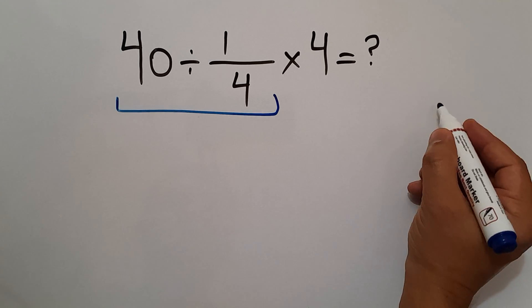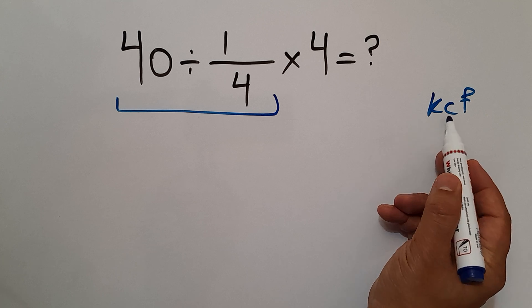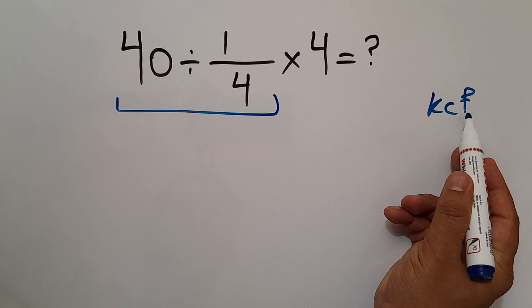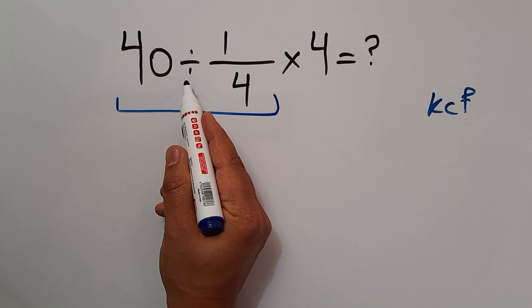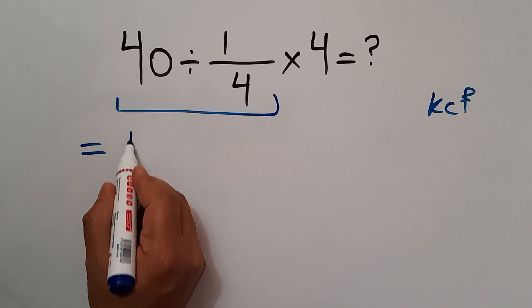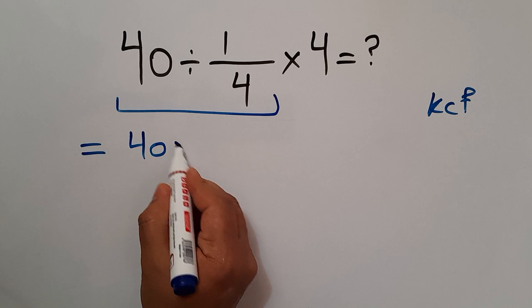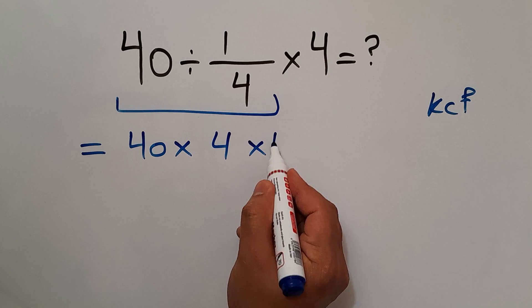According to the KCF rule: K stands for keep, C stands for change, and F stands for flip. Keep the first fraction, change division to multiplication, and flip the second fraction. We can write 40 times 4 and again times 4.